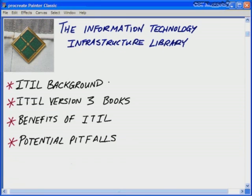In this second movie of the ITIL Foundation CBT Nugget series, we looked at the actual library — the Information Technology Infrastructure Library — covering four key points: the background of ITIL, an overview of ITIL version 3, the five books of version 3, and the benefits and pitfalls of ITIL.